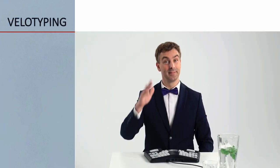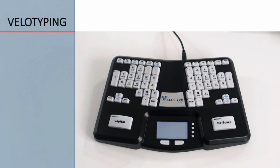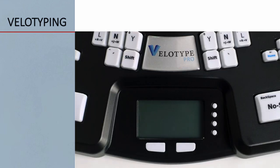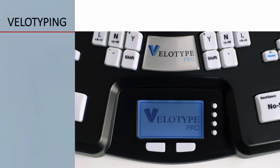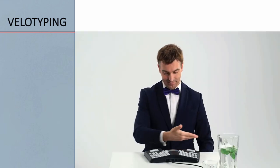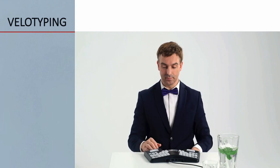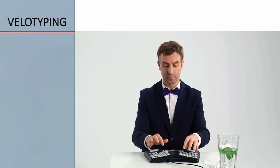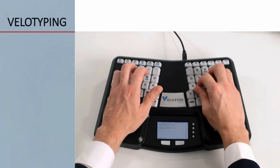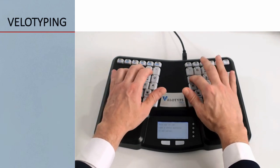Now, velotyping. In velotyping, the subtitler, or speech-to-text interpreter, uses the keyboard to create a written version of speech. In our course, we use velotyping. Of course, you can use other keyboards — for instance, a palantype keyboard, a stenotype, or a regular QWERTY keyboard. Velotype is a chord keyboard, meaning it allows the user to press several keys simultaneously to create syllables. This way of typing is faster than typing with a regular keyboard.